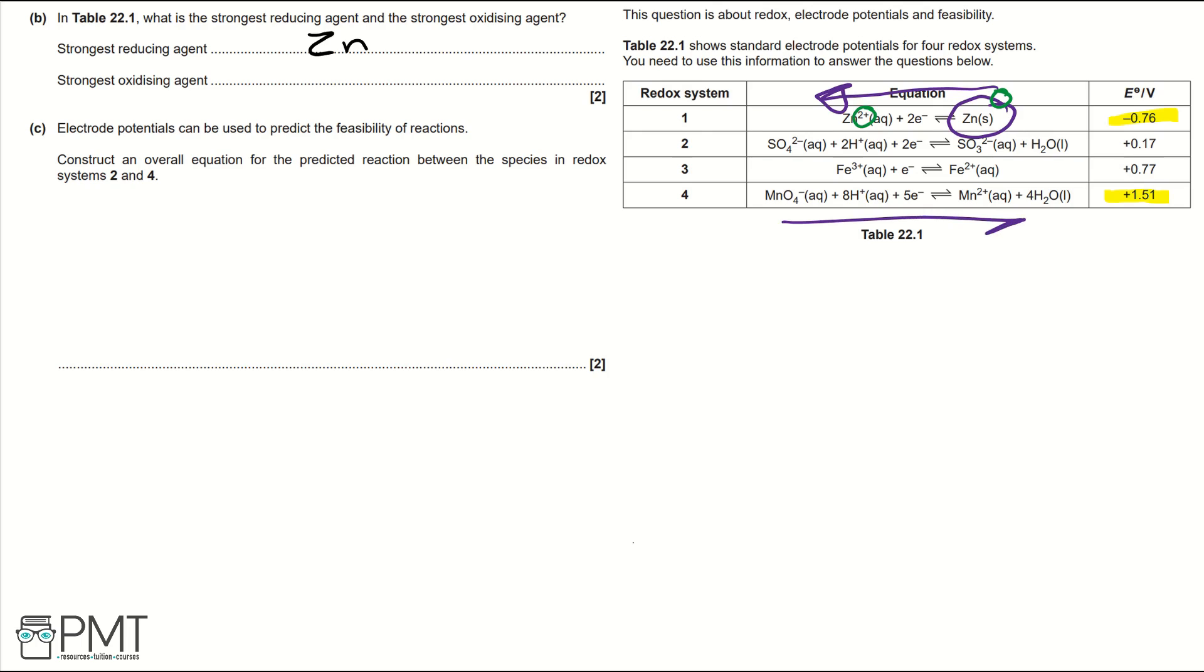Then if we look at redox system 4, that's going to go forwards so we're looking at MnO4- and the Mn is going from an oxidisation state of +7 to an oxidisation state of +2. So it's being reduced and therefore is an oxidising agent so we'd write that on our answer line for oxidising agent. To get the two marks for this question, you need to write zinc and MnO4-.